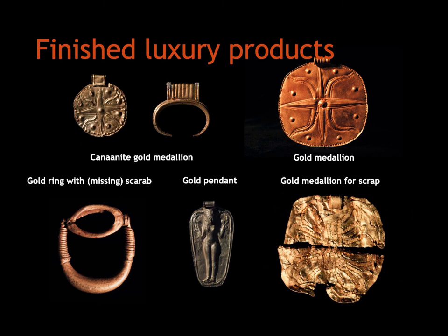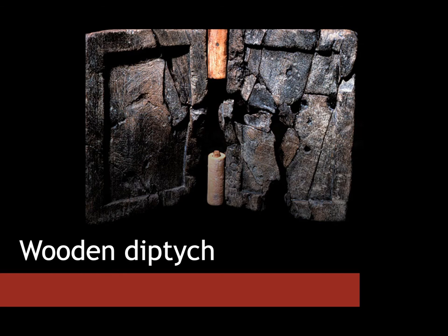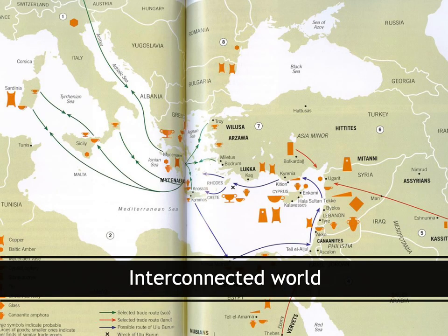There were also finished luxury products such as jewelry from Canaan, Egypt, and beyond, and various weapons of different types from Canaan, Mycenae, Bulgaria and Romania, the northern Balkans, and the Near East — including a notable bronze trident. Another personal favorite is a wooden diptych that would hold wax in two depressions for taking notes. Finally, the shipwreck produced various seals, weights and measures, some from as far afield as Egypt, Assyria, and North Syria.